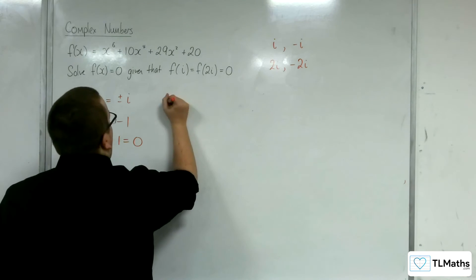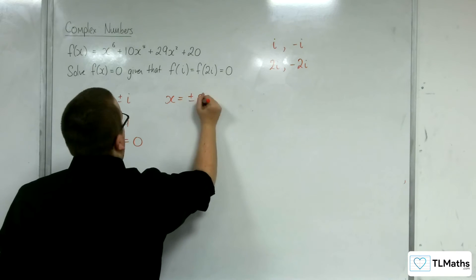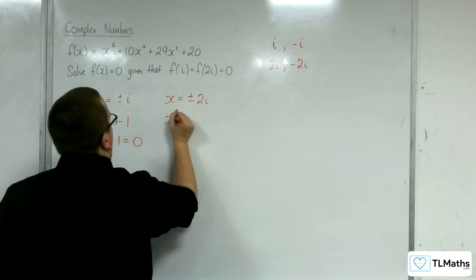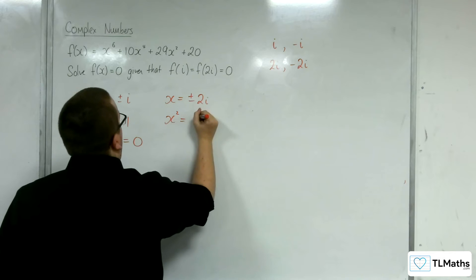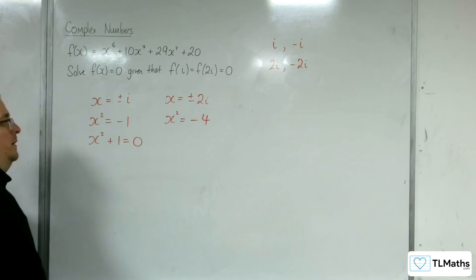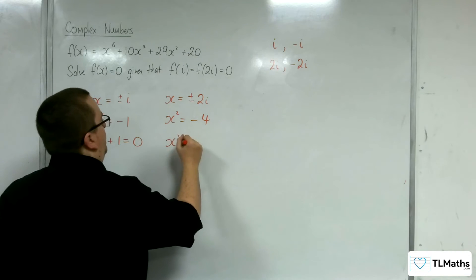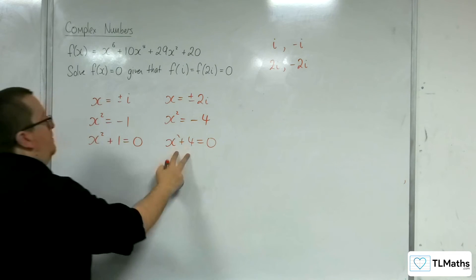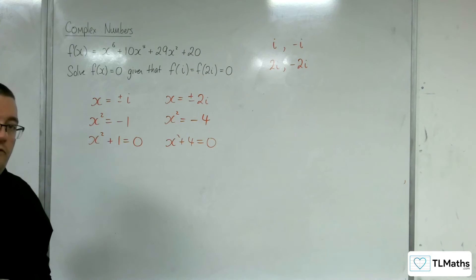Likewise, I can look at x is plus or minus 2i. Squaring both sides, I get x squared is equal to negative 4. So x squared plus 4 is equal to 0, so that means that x squared plus 4 is a factor.